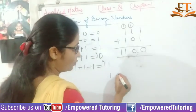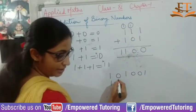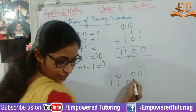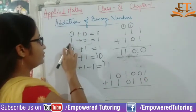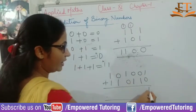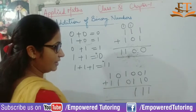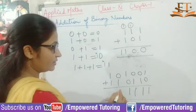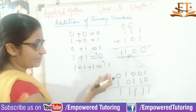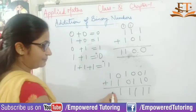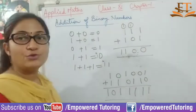Another example: I am taking 101001 and adding 110110110. Then 1 plus 0 gives you 1; 0 plus 1 gives you 1; 0 plus 1 gives you 1; 1 plus 0 gives you 1; 0 plus 1 gives you 1; and 1 plus 1 gives you 10. Since there is no other digit for a carry-over, simply write 10. This is how you add.